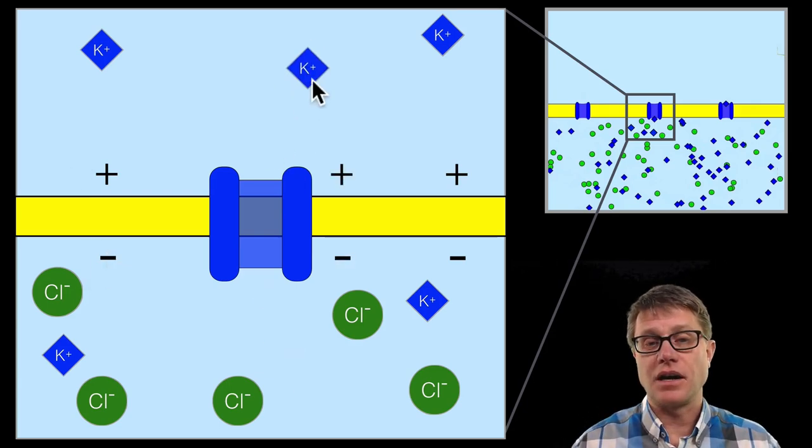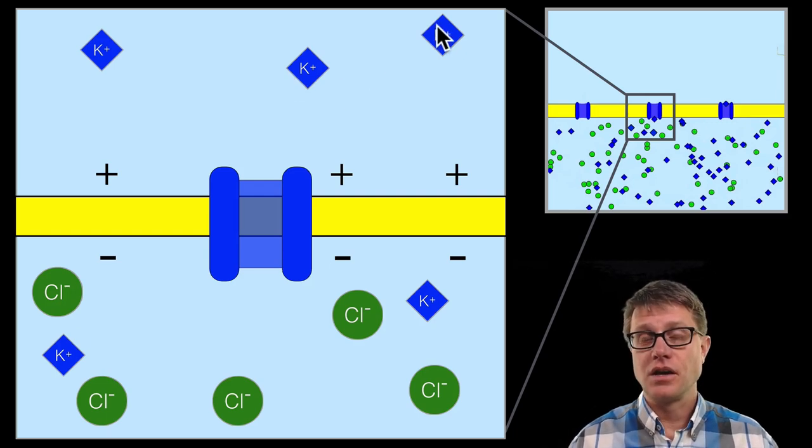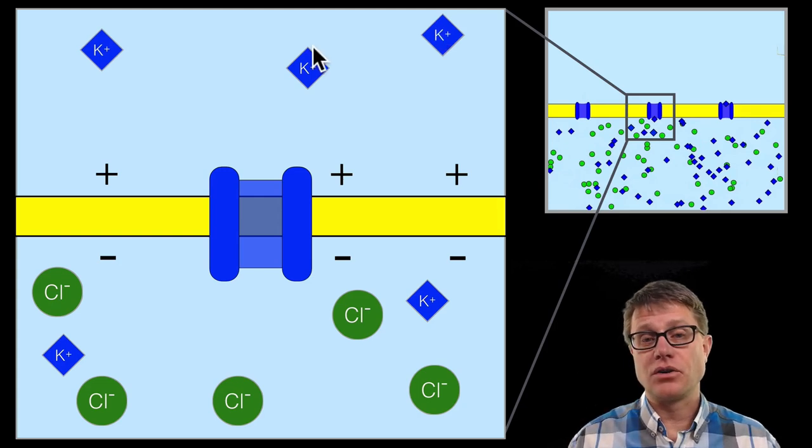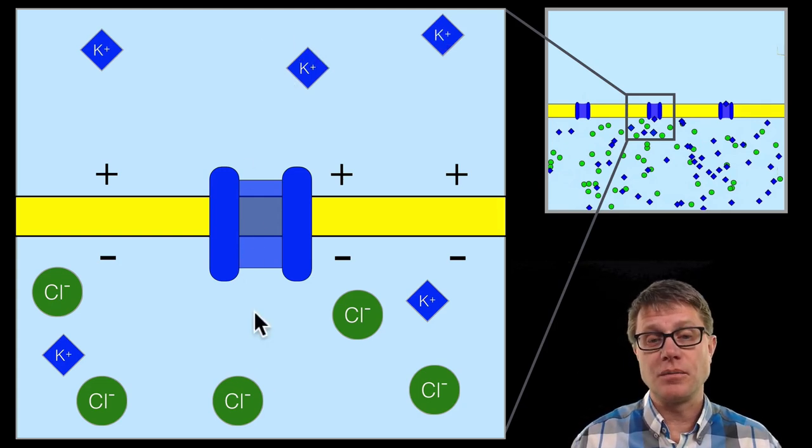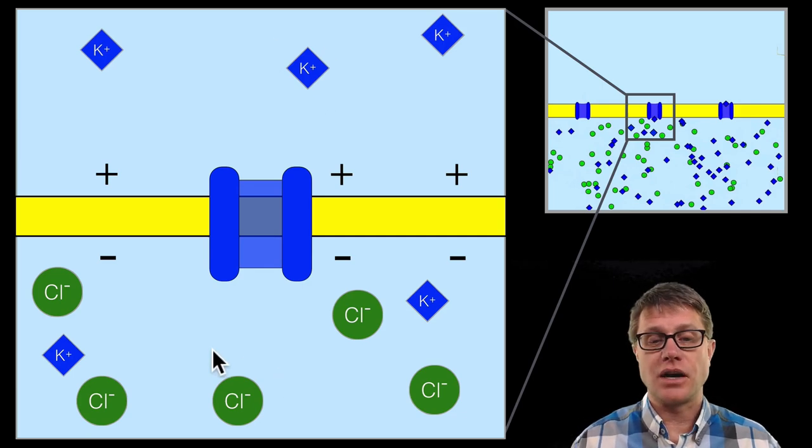Now if we think about these ions for a second, these are all positive charges or like charges. And you probably know that like charges repel. In other words, they do not like spending time around each other. And so there is going to be a force that is pushing them in the other direction. And also, since they have a positive charge, they are going to be attracted to the relative negative charge that is on the bottom.